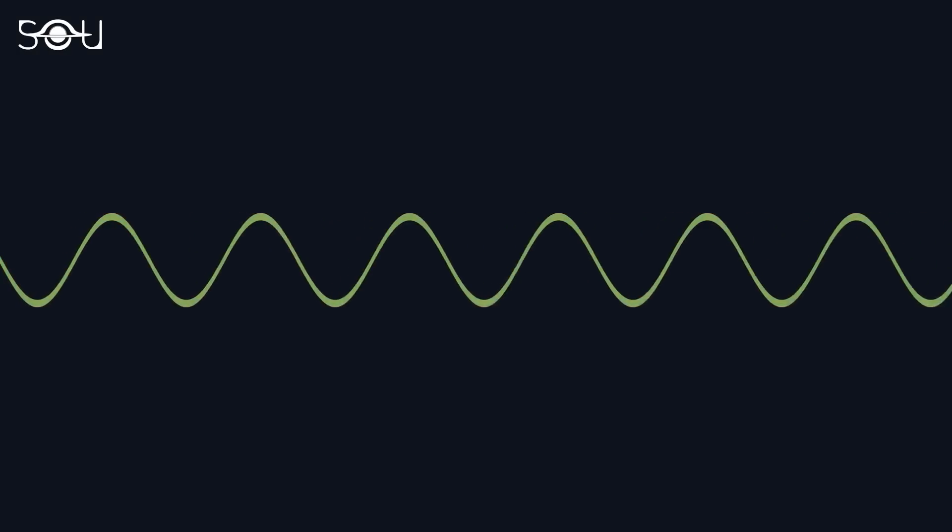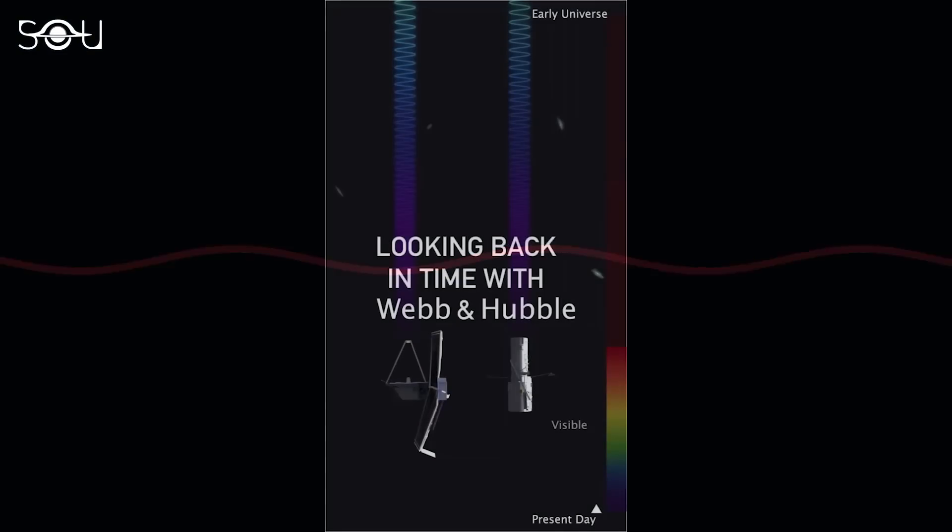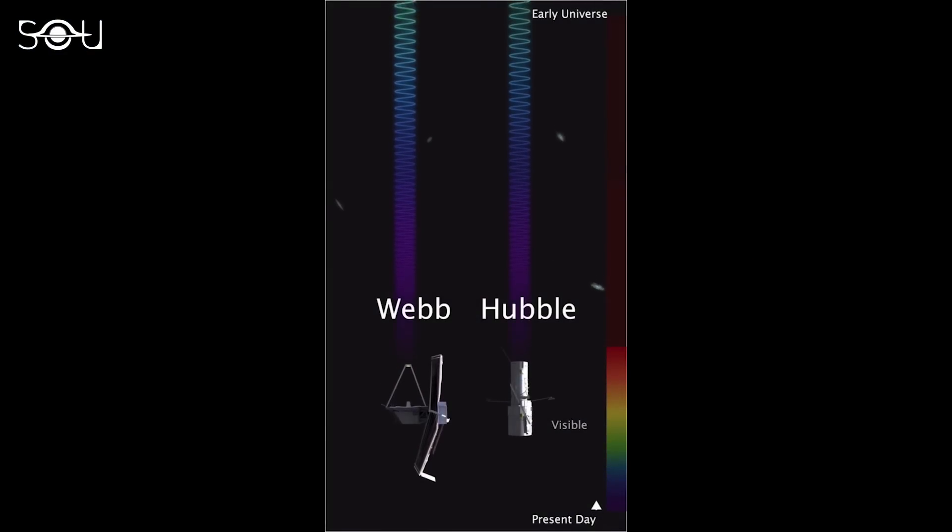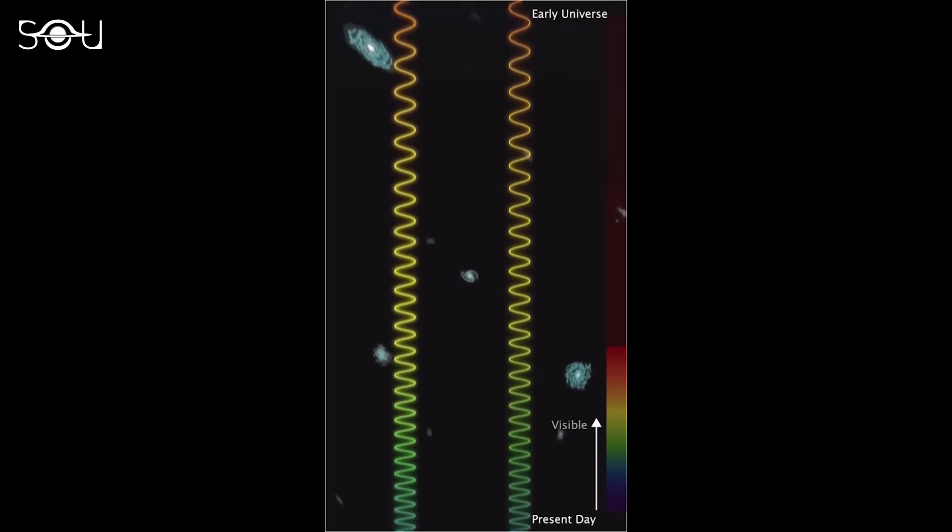The light from these galaxies is highly redshifted, requiring powerful infrared instruments to be observed. The look-back time of these two telescopes varies significantly, thanks to Webb's design and instruments.